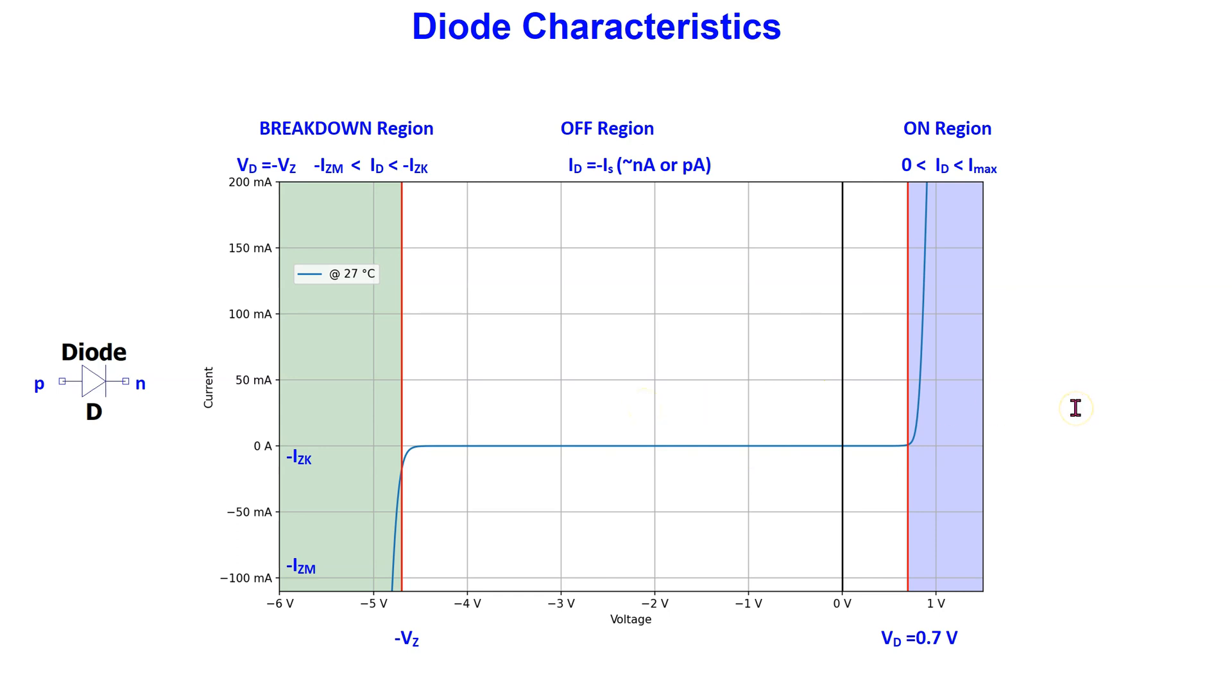The typical current voltage characteristics for a silicon diode is shown here. When the diode is forward biased or on, it allows current to flow. Practical diodes have a maximum power or equivalently a maximum current rating Imax. This value is given in the diode datasheet.